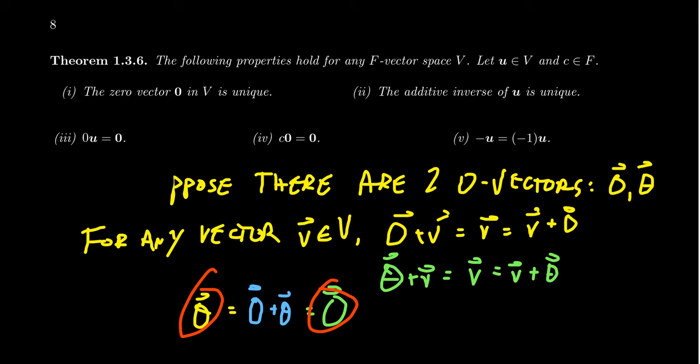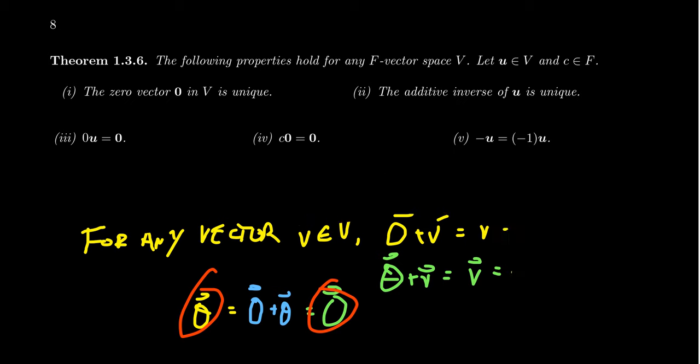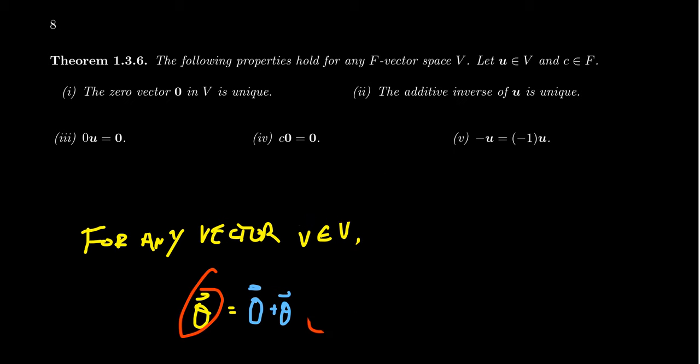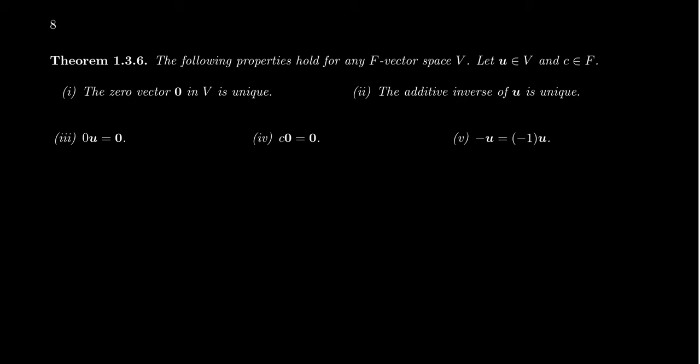This property is true for every vector space that could ever happen. You can use this property to show that something is not a vector space — if a set of numbers has two zeros, then it's not a vector space.